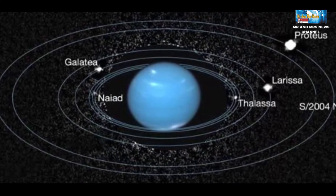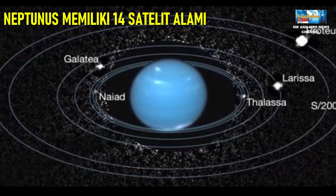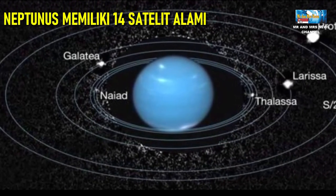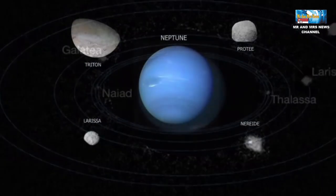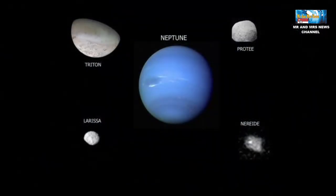Neptunus is known to have 14 natural satellites. The largest satellite consists of 99.5% of the mass in orbit around Neptune and is the only one formed as a spheroid: Triton, discovered by William Lassell 17 days after Neptune's discovery.